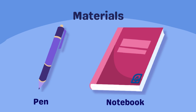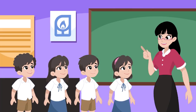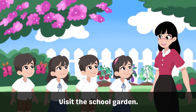When we go outside the classroom, you need to stay with your group and do the activity. Are we all ready? Go to your respective group, then form a line. Yes, Ms. Reyes. The first place that we will visit is the school garden.